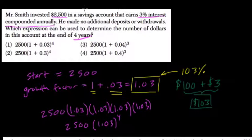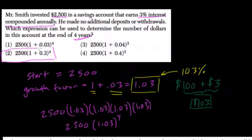And you would have $2,813.77, but they want the formula, right? And here, they're representing the formula choice two, is 2,500 times 1 plus 0.03, which is 1.03 to the fourth power.